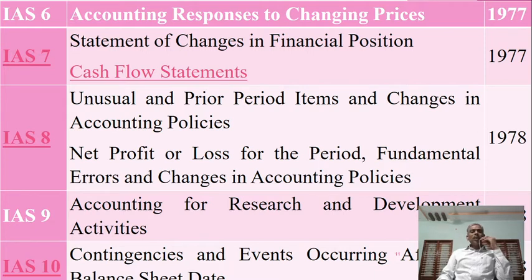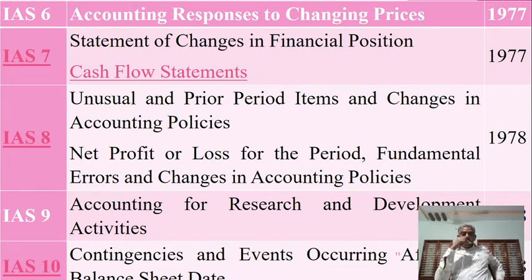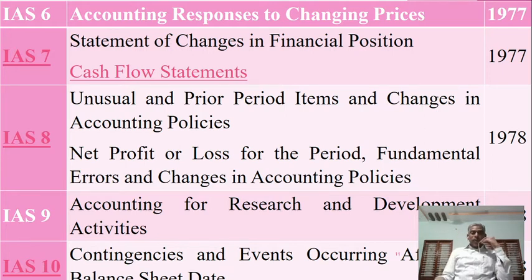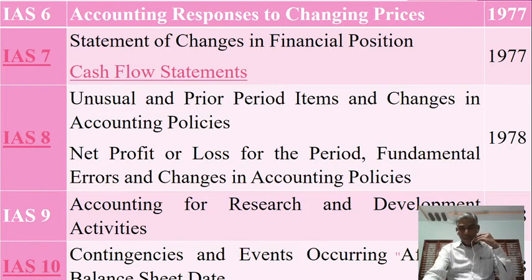IAS 8 covers net profit or loss for the period, fundamental errors, and changes in accounting policies, established in 1978. IAS 9 is on accounting for research and development activities, developed in 1978. IAS 10 addresses contingencies and events occurring after the balance sheet date, with standards framed and established in 1978.